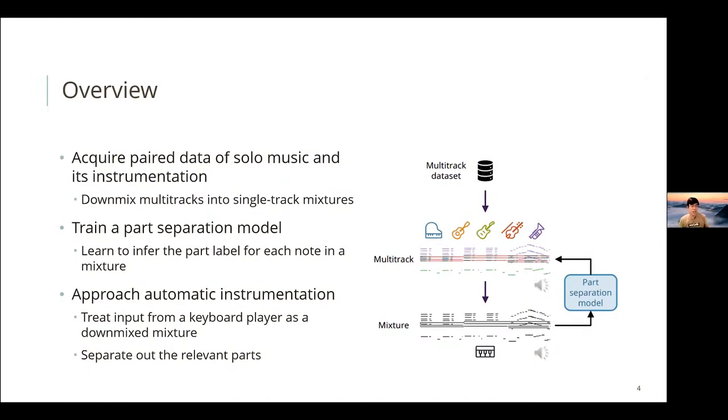The main problem here is that we don't have that kind of data with solo music and its instrumentation. So we acquire this data by dumb mixing multitracks into single track mixtures. As you can see on the right, it's easy to get lots of multitrack music data. If we dumb mix it, pretending it's a mixture, then we can have this paired data to train our part separation model.